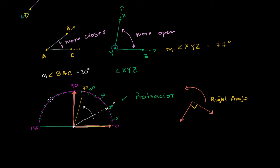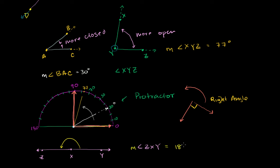As you go even wider and wider, you get all the way to an angle where the two rays form a line. You could imagine, say, points Z, X, and Y, where you could call this angle ZXY — but it's so open that it forms an actual line, meaning Z, X, and Y are collinear. What we have right over here is a 180-degree angle, and we would say the measure of angle ZXY is 180 degrees.